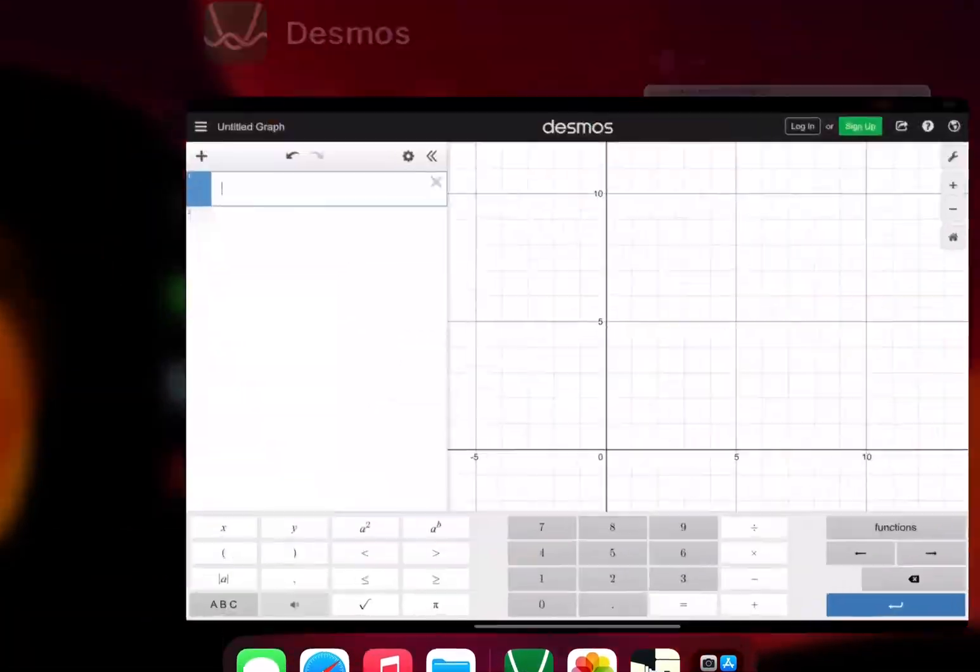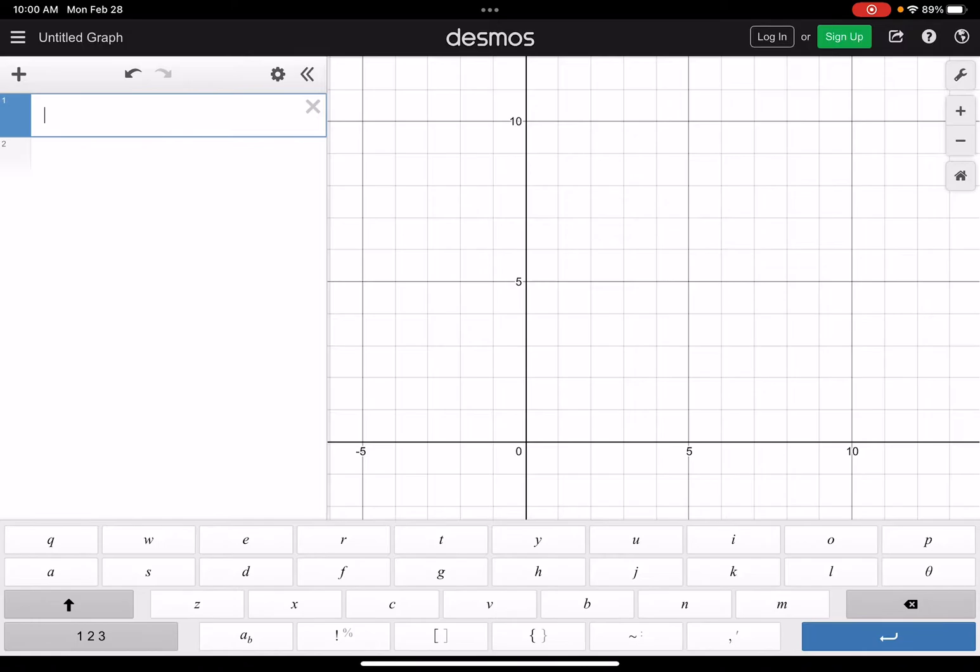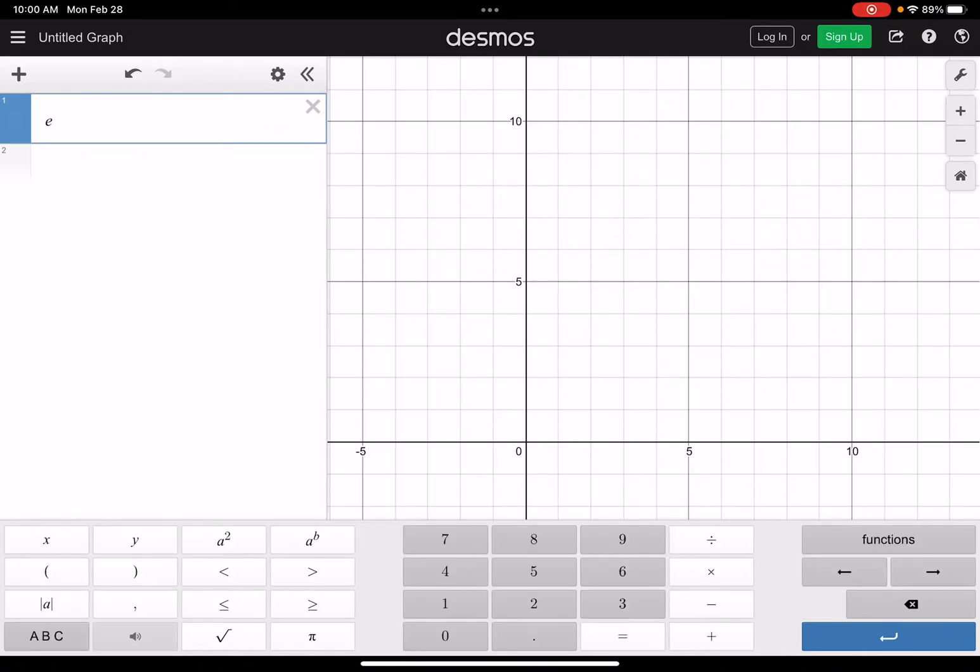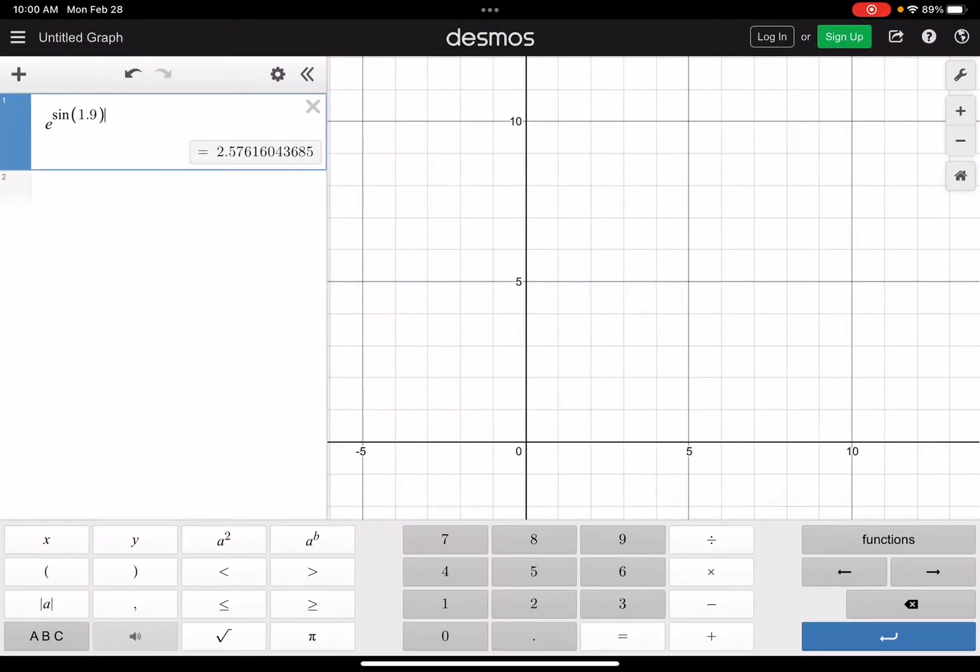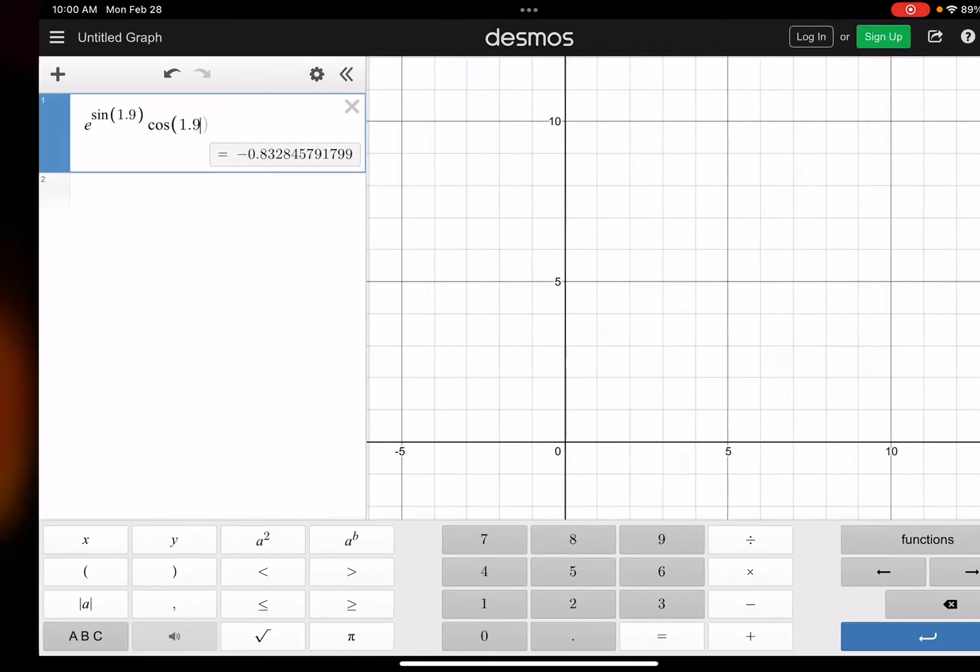e to the sine of v. We'll do e raised to the sine of v, which was 1.9. And then multiplied by the cosine of 1.9. And then that is negative 0.83.